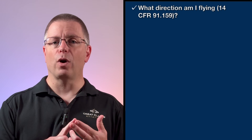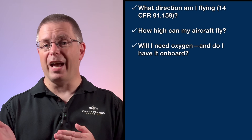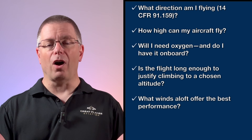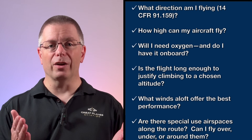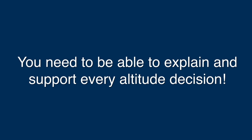Altitude selection needs to be deliberate and defensible. You must avoid terrain and obstacles, but sound planning goes way beyond that. A few questions you can ask yourself when choosing an altitude are: What direction am I flying? Follow 14 CFR 91.159 to reduce collision risk. How high can my aircraft safely climb? Will I need oxygen and do I have it on board? Is the flight long enough to justify climbing to that altitude? What winds aloft offer the best performance? Are there restricted or special use areas along the route, and can I fly over, under, or around them? The key takeaway is that you need to be able to explain and support every altitude decision.